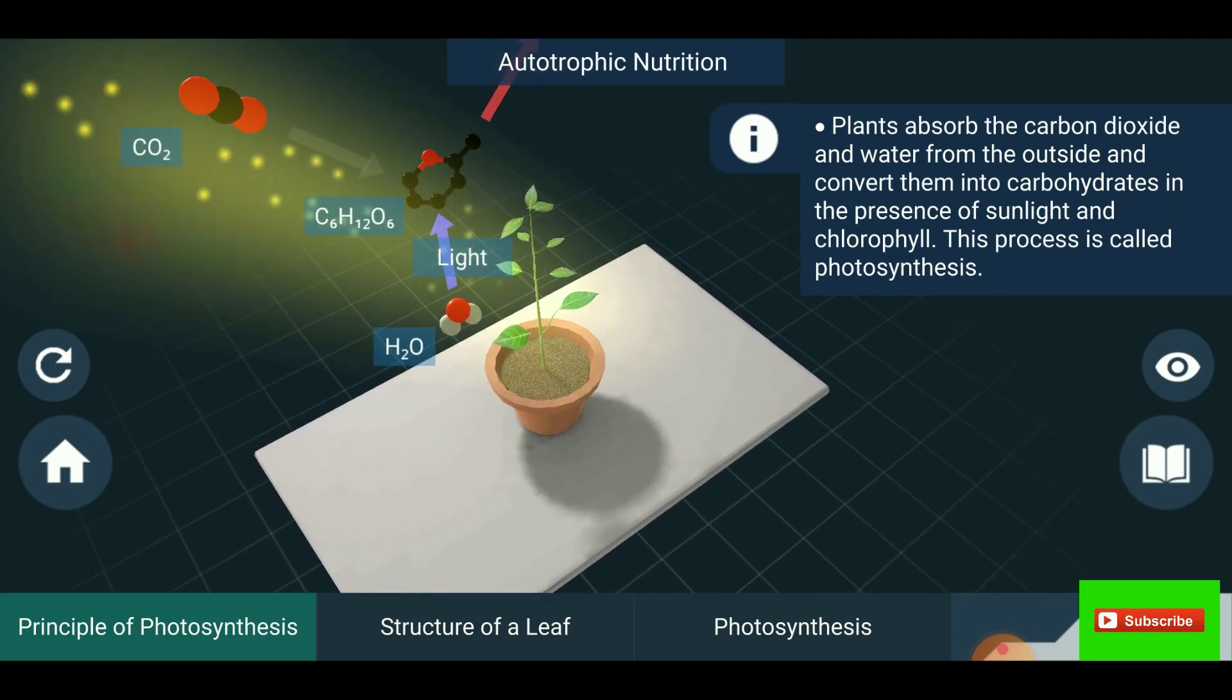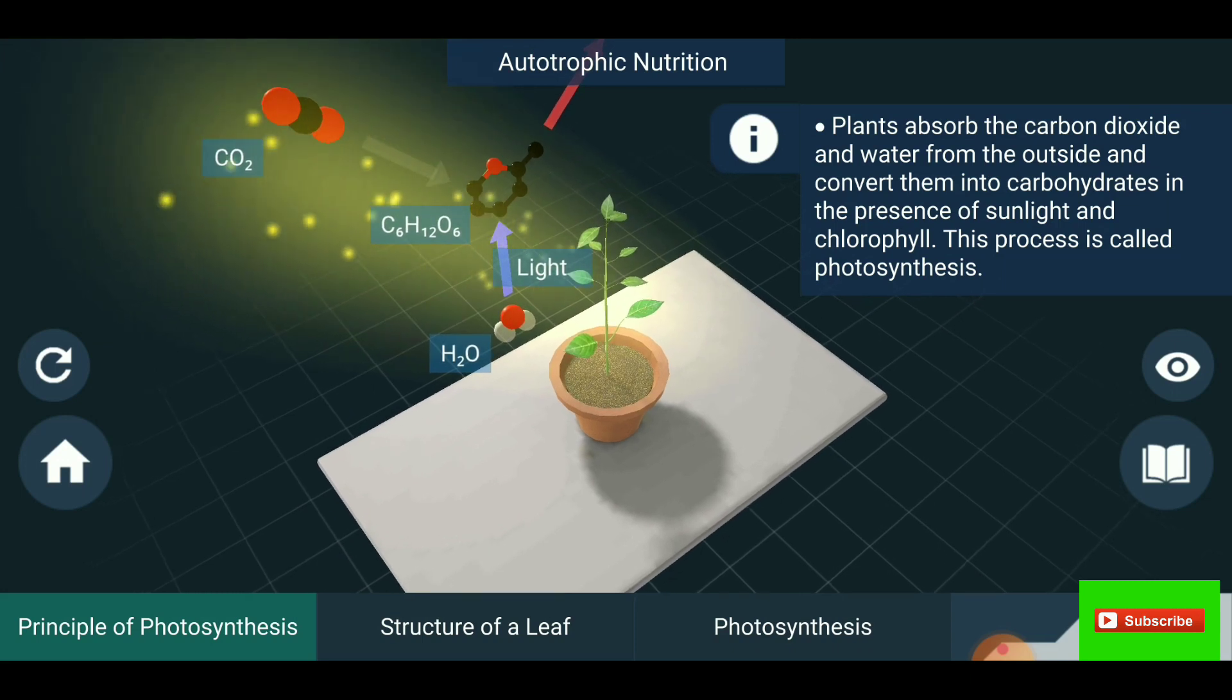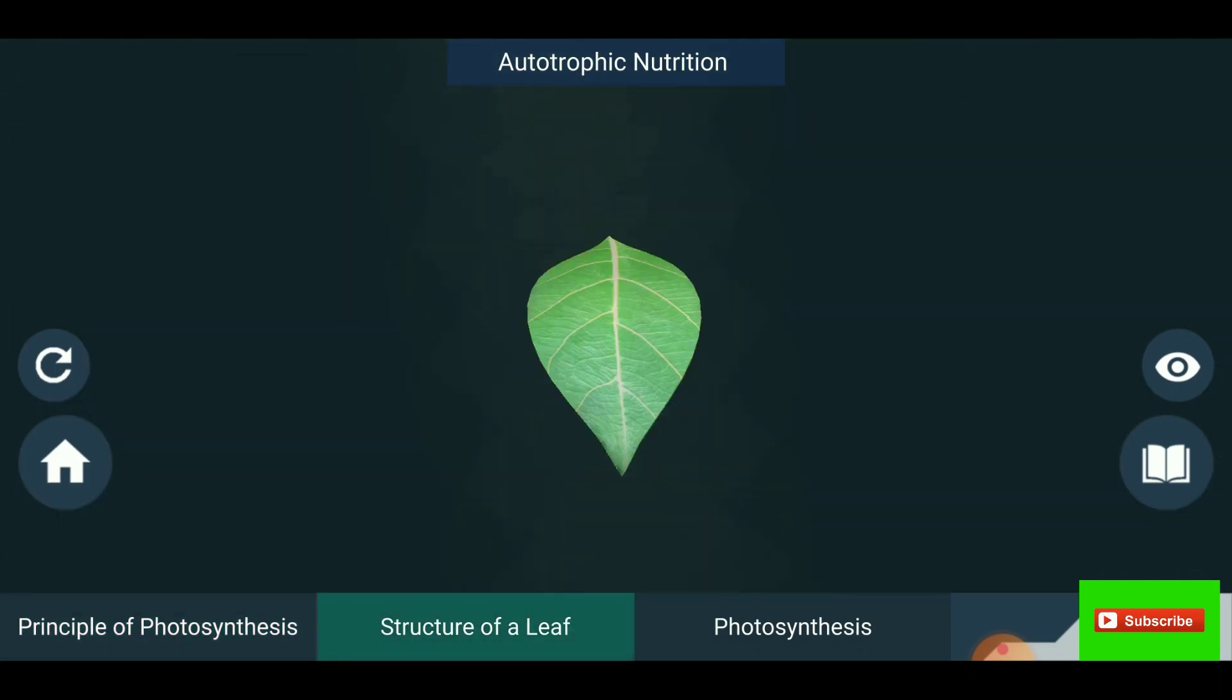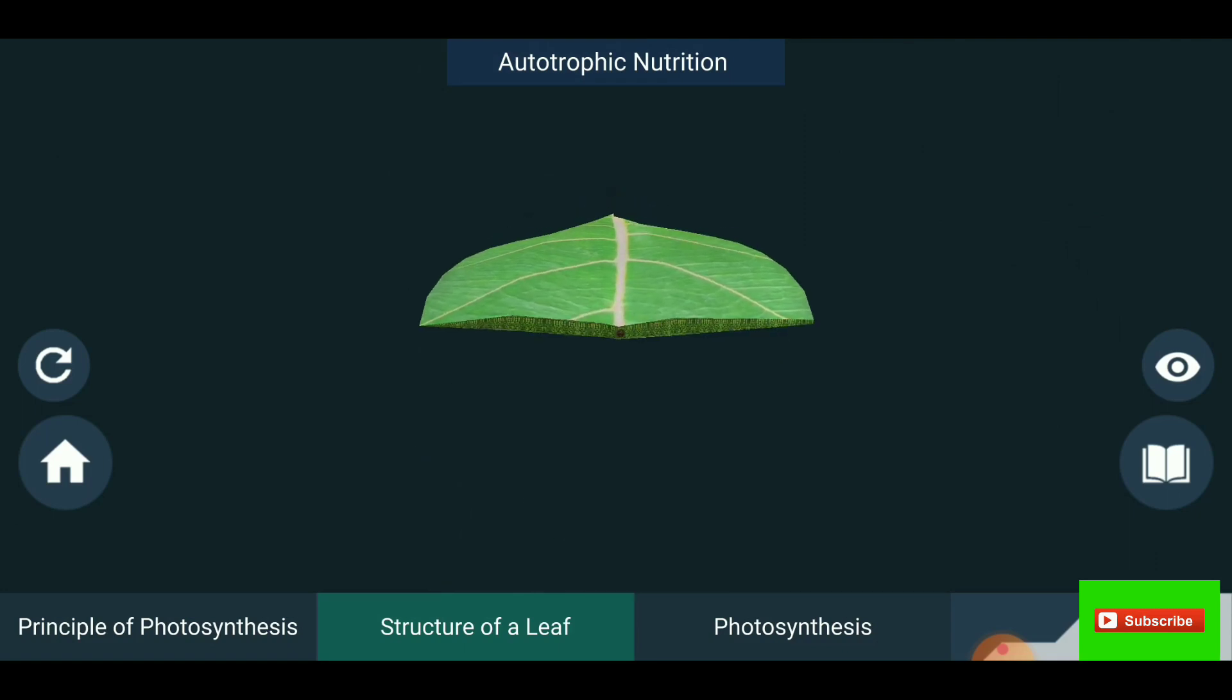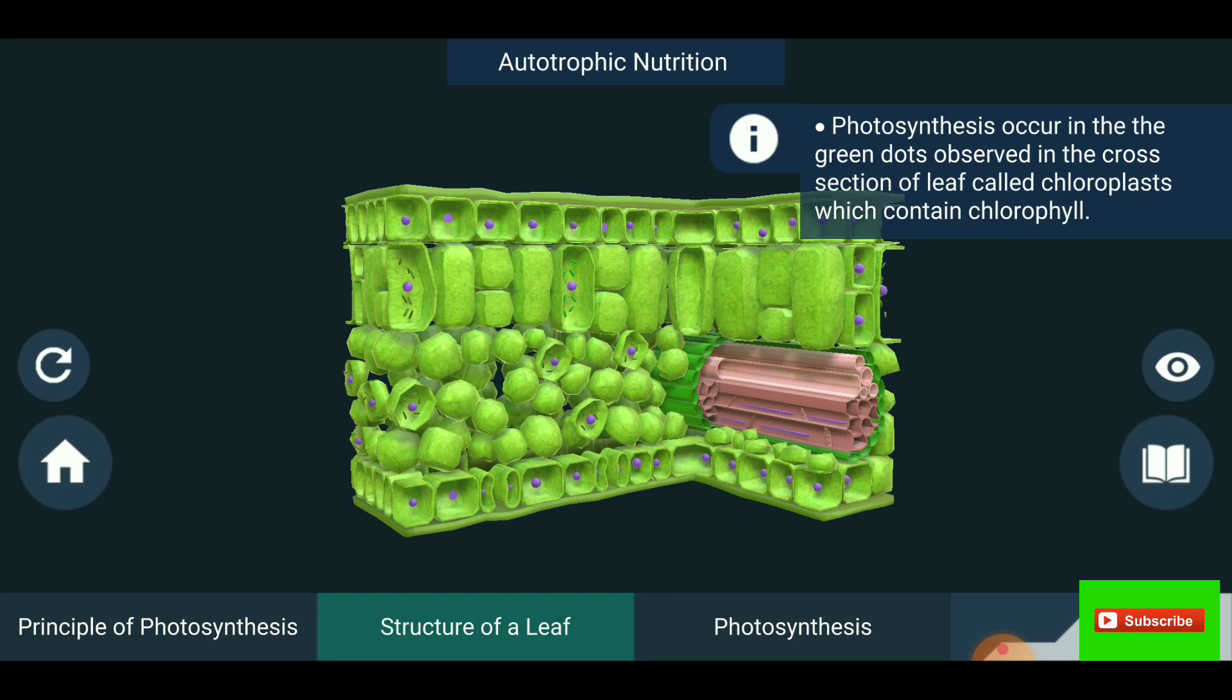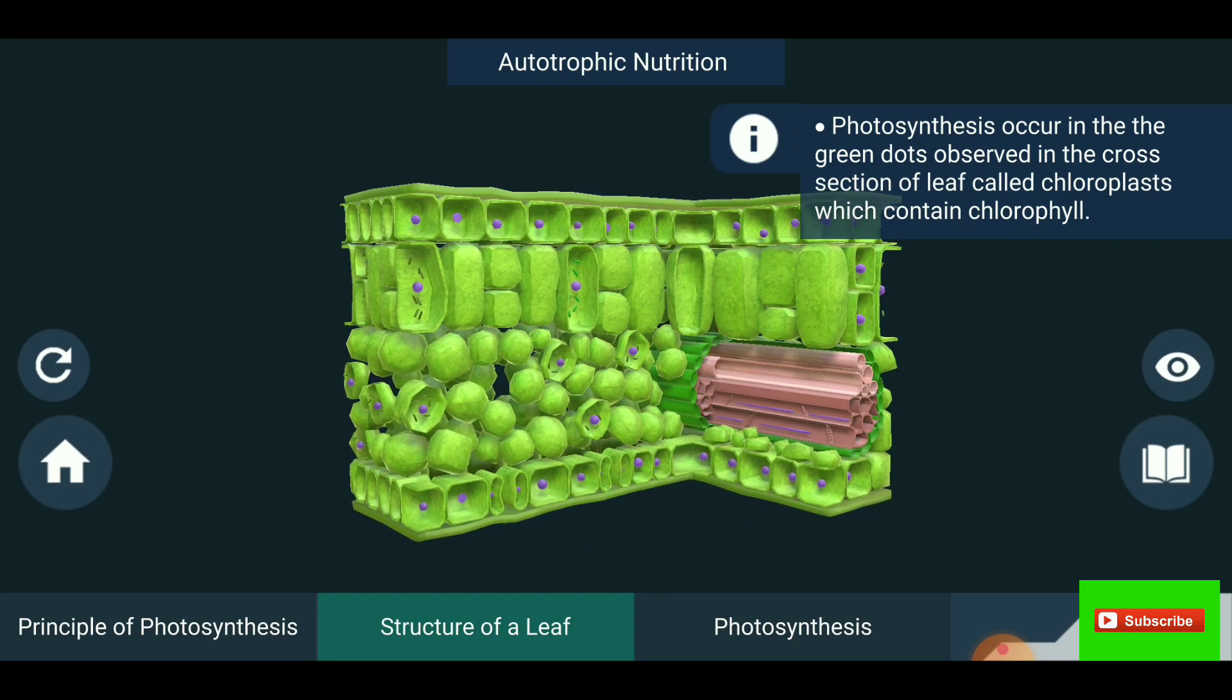You are seeing closely the structure of leaf. Photosynthesis occurs in the green dots observed in the cross section of leaf called chloroplast, which contain chlorophyll.